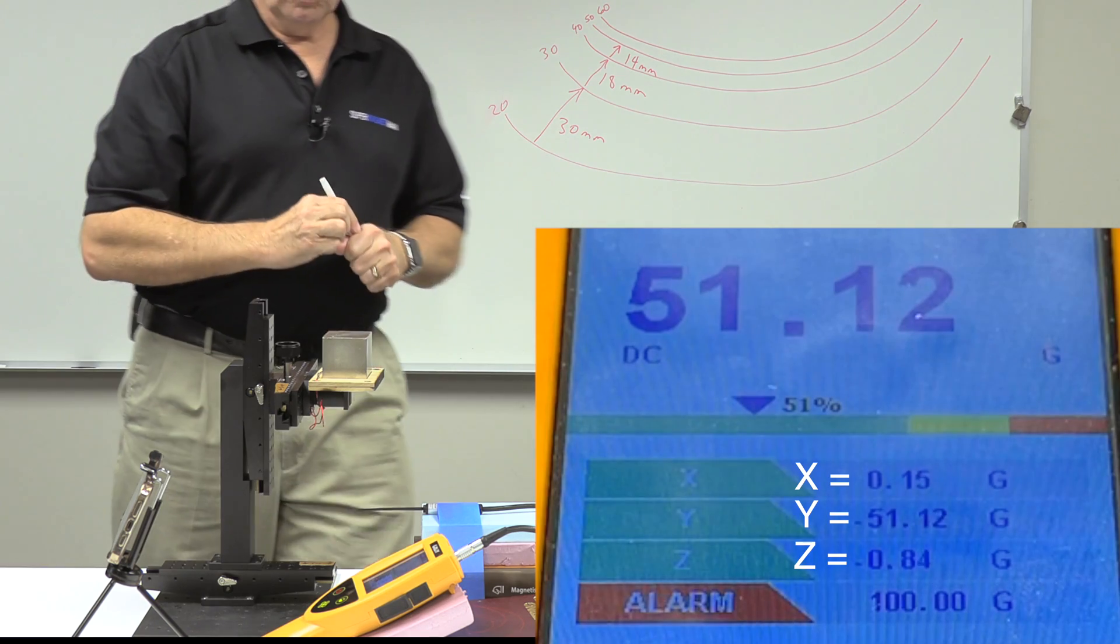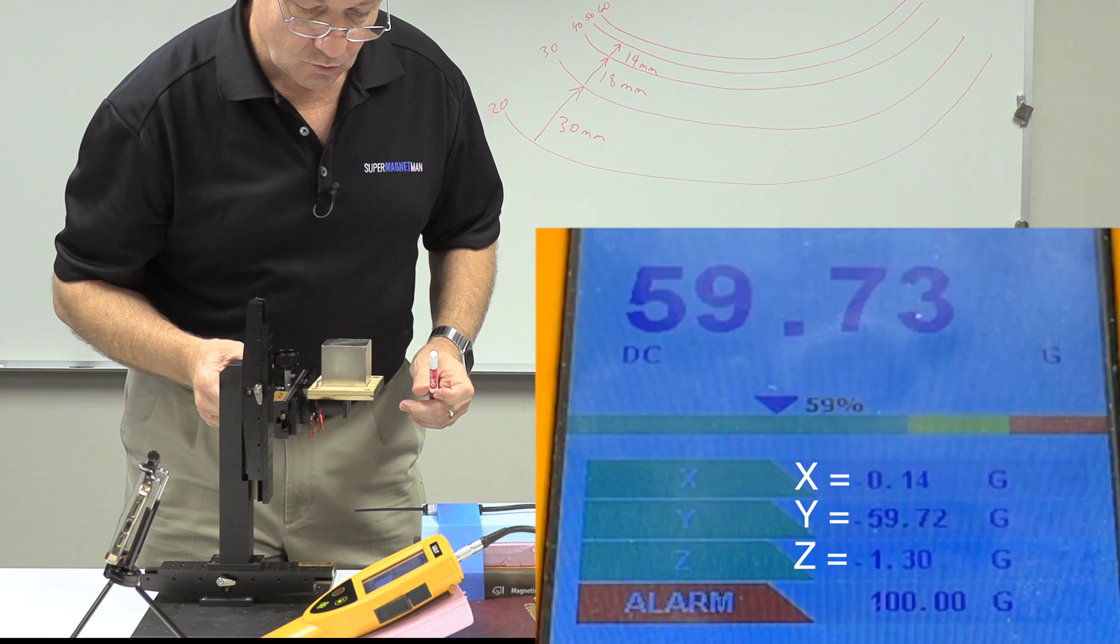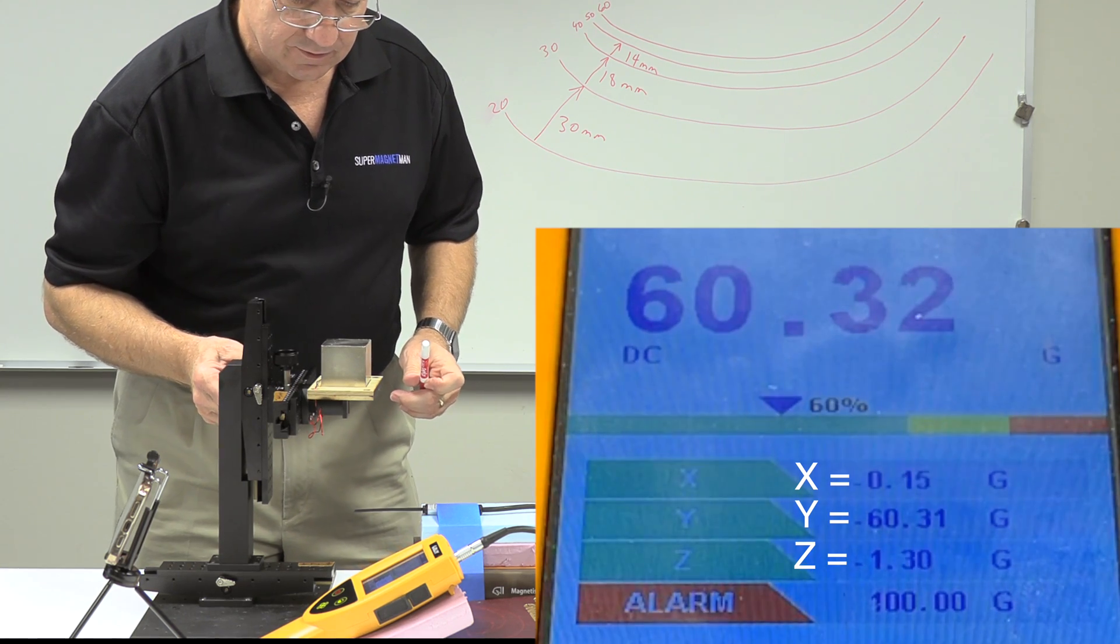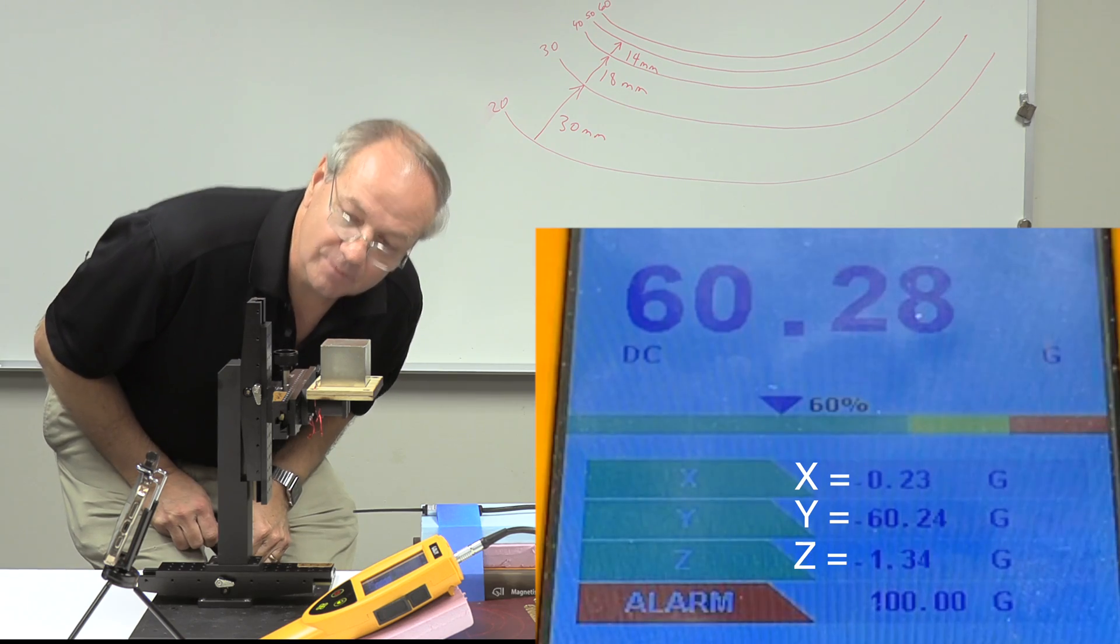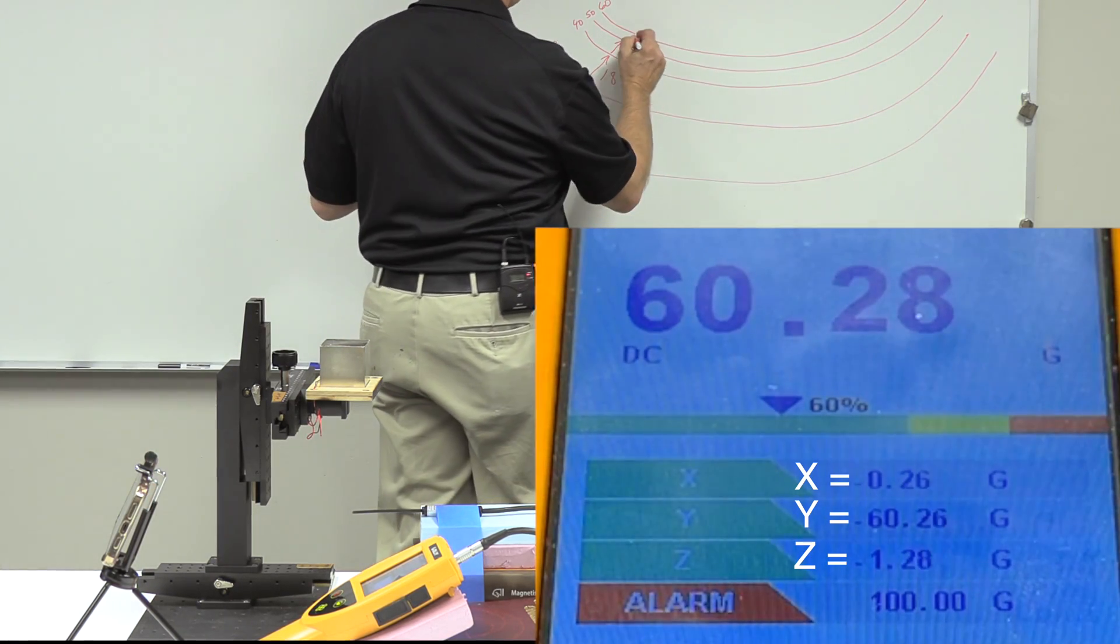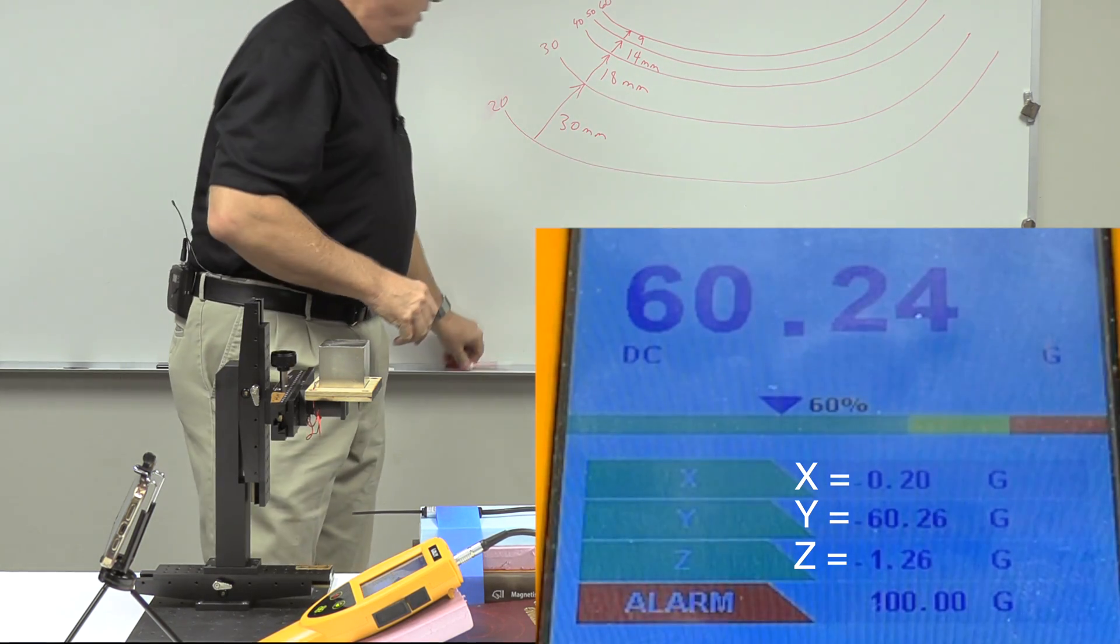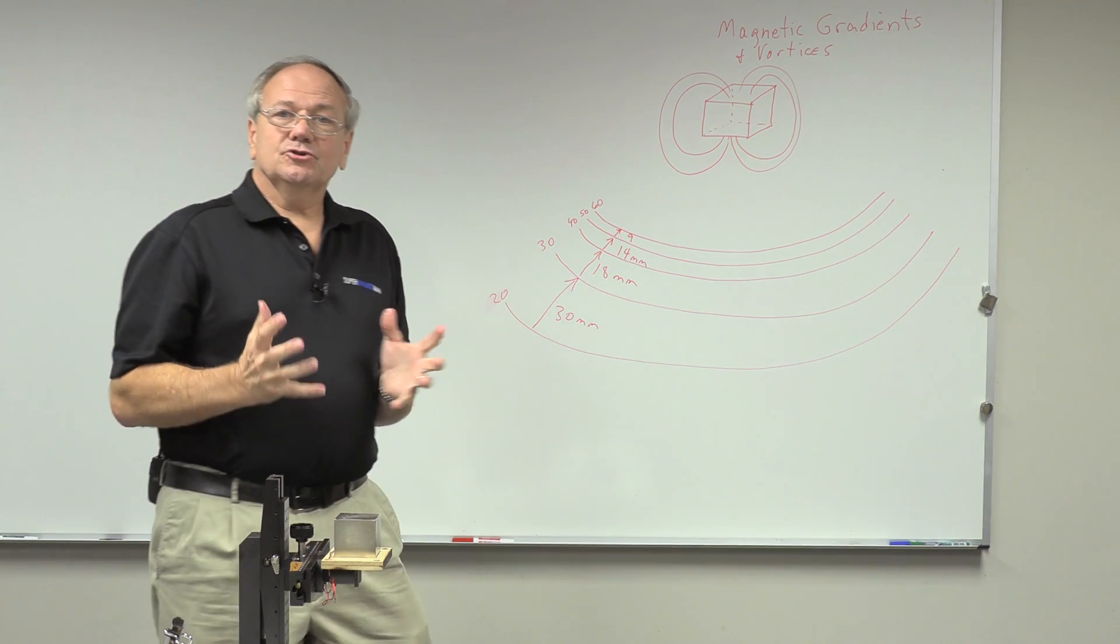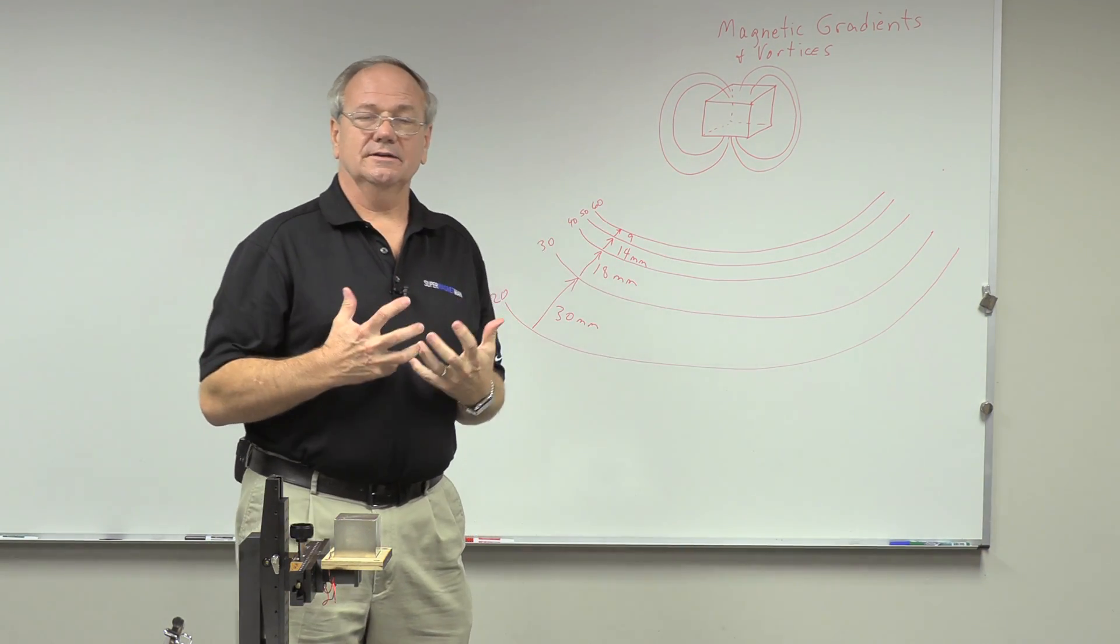And then just one more. We'll do the 50 to 60. And going 50 to 60, you see how much quicker we get there, and we get to 60, and that would be at about a 26. So from 17 to 26 would be about 9 millimeters. And so you can tell that's how much it's changing. These numbers are indicating what the gradient is.